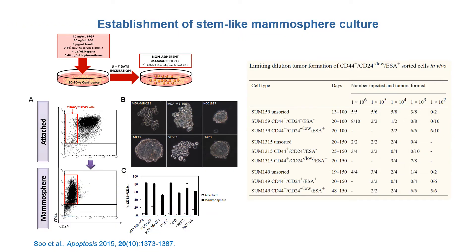Our group and others have shown that breast cancer cell lines contain a small population of cells that mimic cancer stem cell behaviors. Similar to primary breast cancers, cell line-derived cancer stem cells are enriched in cells with the CD44-high, CD24-low, and epithelial-specific antigen-positive phenotype. Importantly, as few as 100 CD44-high, CD24-low, and epithelial-specific antigen-positive cells can form tumors in the in vivo limiting dilution assay, validating the use of cell lines to elucidate the unique mechanisms governing maintenance and survival of tumorigenic breast cancer stem cells.